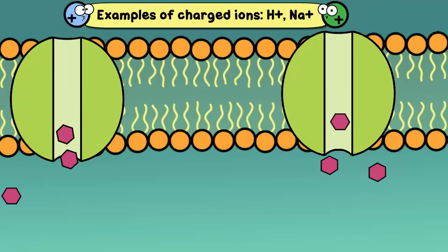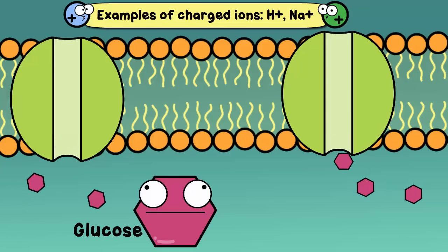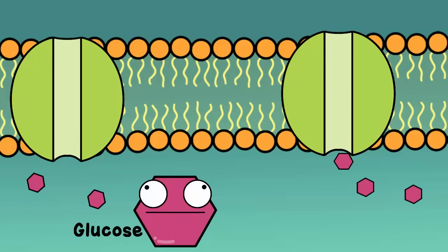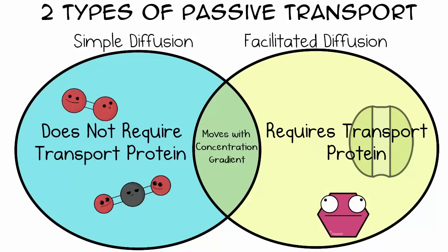Charged ions often require a protein channel in order to pass through. Glucose needs the help of a transport protein to pass through. In osmosis, for water to travel at a fast rate across the membrane, it passes through protein channels called aquaporins. So these are all examples of facilitated diffusion, which is a type of passive transport and moves with the concentration gradient of high to low concentration.